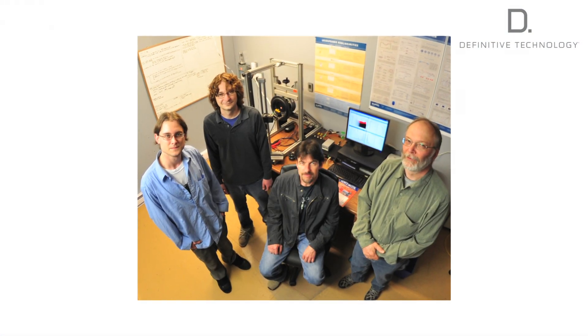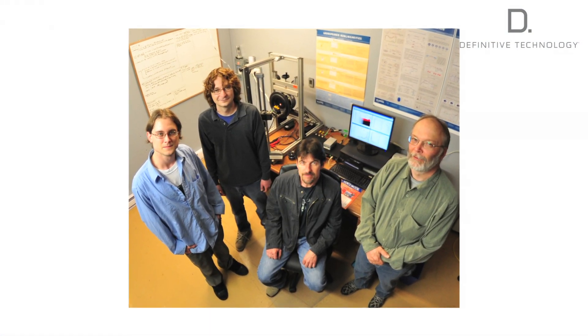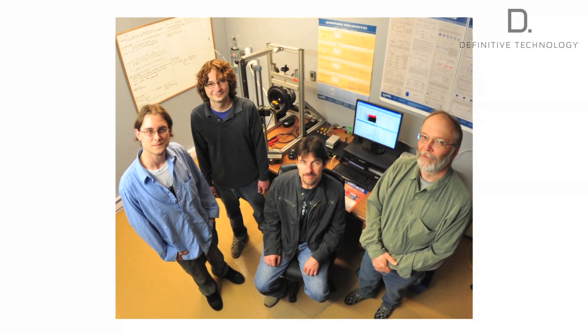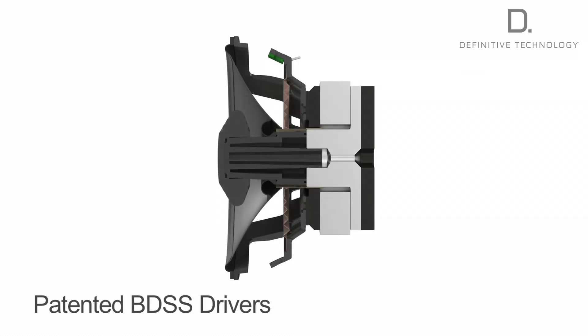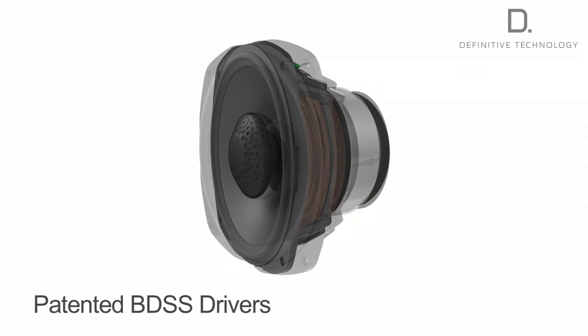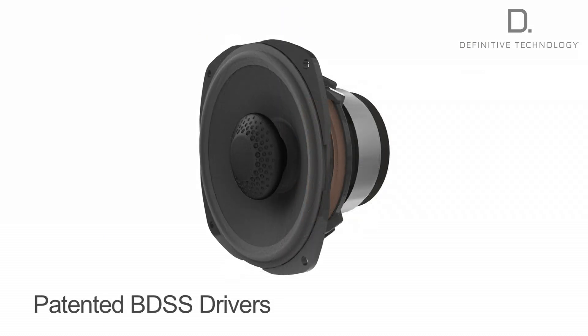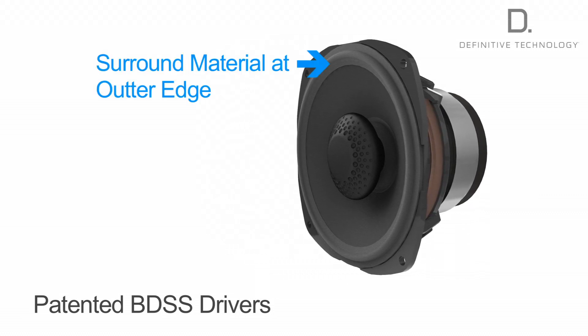A good engineer, like the ones we have at Definitive, carefully tunes the shape and density of the surround to maximize resonance absorption. In our patented balanced double surround system drivers, we use specially tuned rubber surrounds both at the outside and inside edges of the cone, to suppress resonance even more effectively.